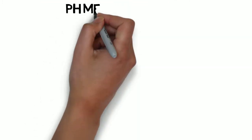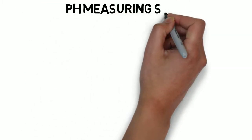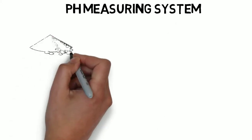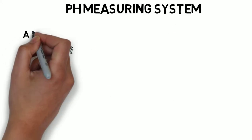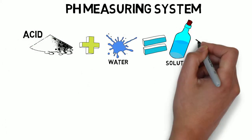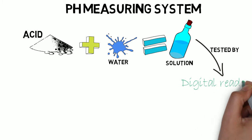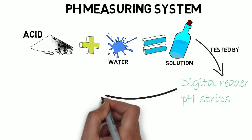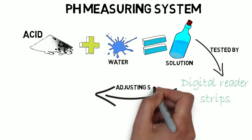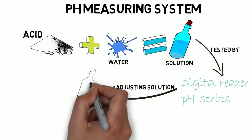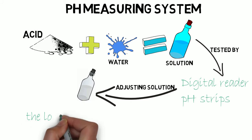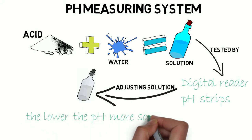To have absolute control, we use a pH measuring system by diluting acid powder with water to create a solution, where we can test our pH by digital reader or pH strips, then adjusting and adding more powder to our solution. Remember, the lower the pH, the more sour the ingredient.